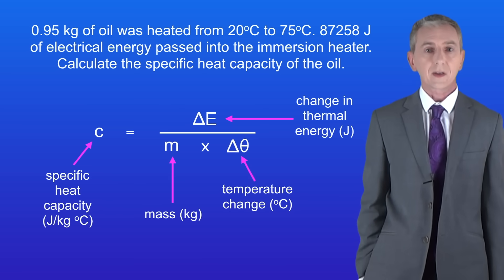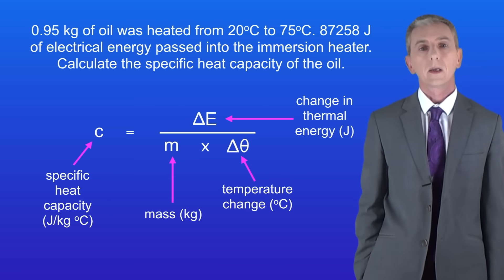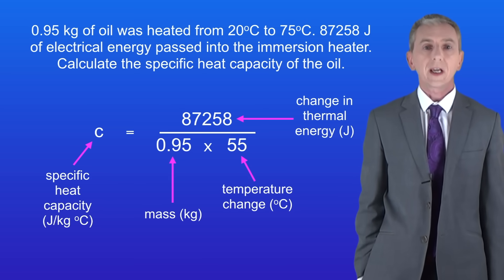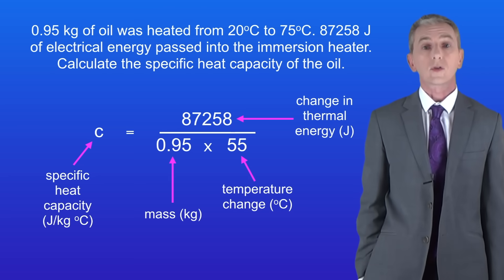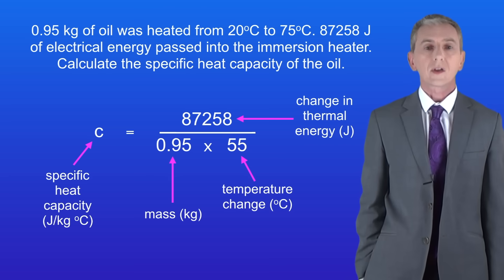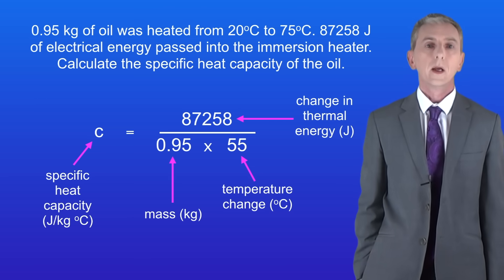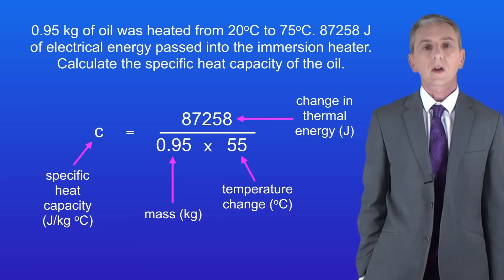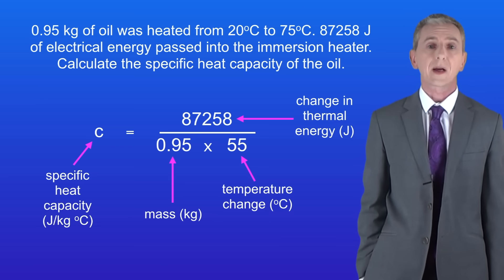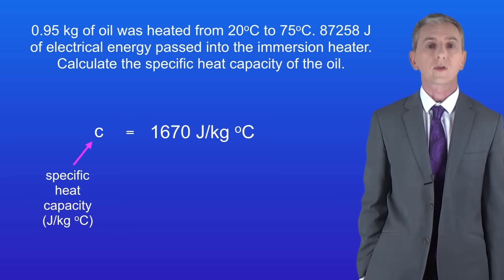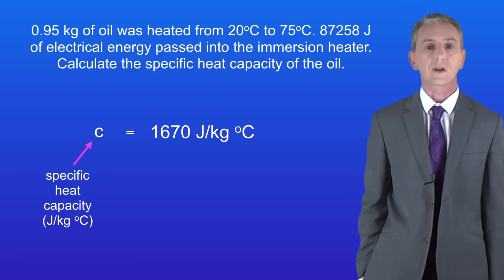Calculate the specific heat capacity of the oil. The change in thermal energy is 87,258 joules, the mass is 0.95 kilograms, and the temperature change is 55 degrees Celsius. Putting these numbers into the equation gives us a specific heat capacity of 1,670 joules per kilogram per degree Celsius.